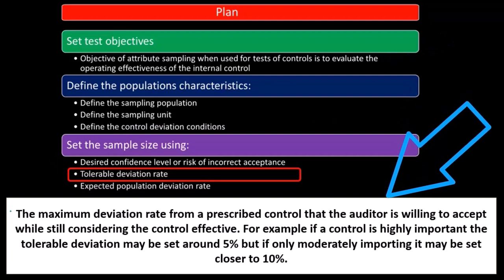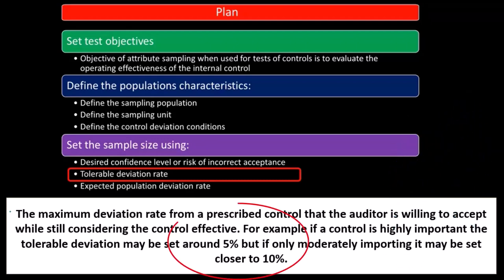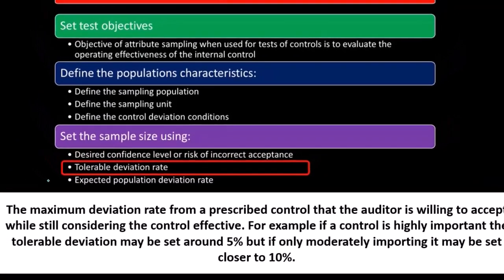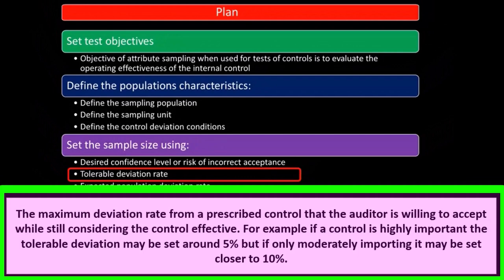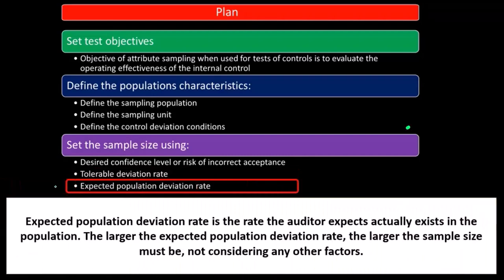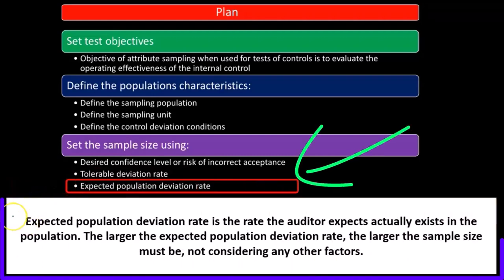While still considering the control effective. For example, if a control is highly important, the tolerable deviation may be set to 5 percent, but if it's only moderately important, we may set it to 10 percent. So the tolerable deviation is the maximum deviation rate from a prescribed control that the auditor is willing to accept while still considering the control effective.